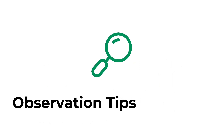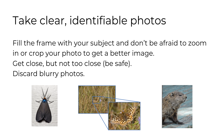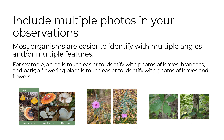Now for some observation tips. Take clear, identifiable photos. Fill the frame with your subject and don't be afraid to zoom in or crop your photo to get a better image. Get close to the organism, but not too close — be sure to stay safe. Discard any blurry photographs. Include multiple photos in your observations, as most organisms are easier to identify with multiple angles and multiple features. For example, a tree is much easier to identify with photos of leaves, branches, and bark. A flowering plant is much easier to identify with photos of leaves and flowers.